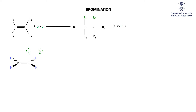Now of course Br2 is a nonpolar molecule, so you're saying, well how on earth are we going to get a slightly positive and slightly negative? Well, it's an induced dipole. As this bromine molecule comes up to this big cloud of electron density, that cloud of electron density repels the electrons on this bromine, so the left-hand bromine becomes slightly positive and the right-hand one becomes slightly negative.